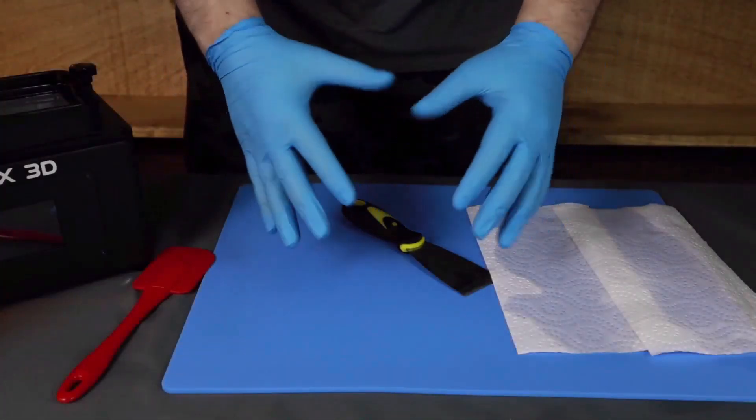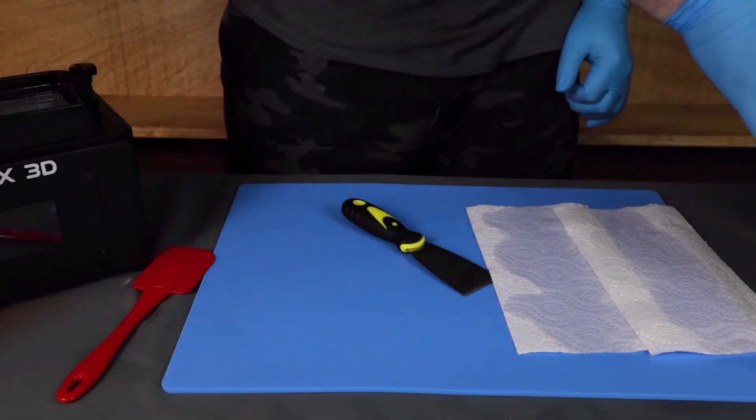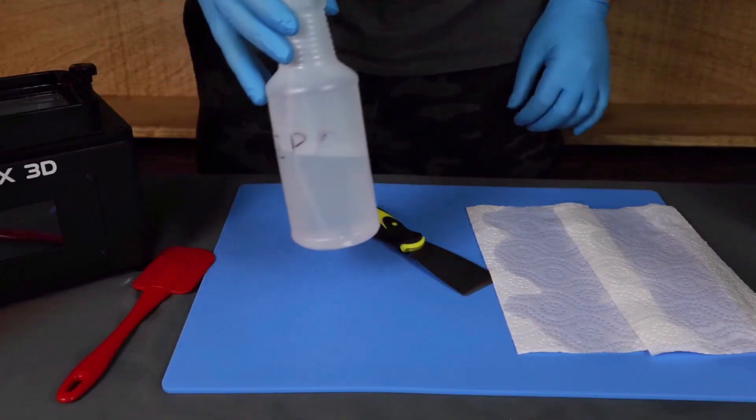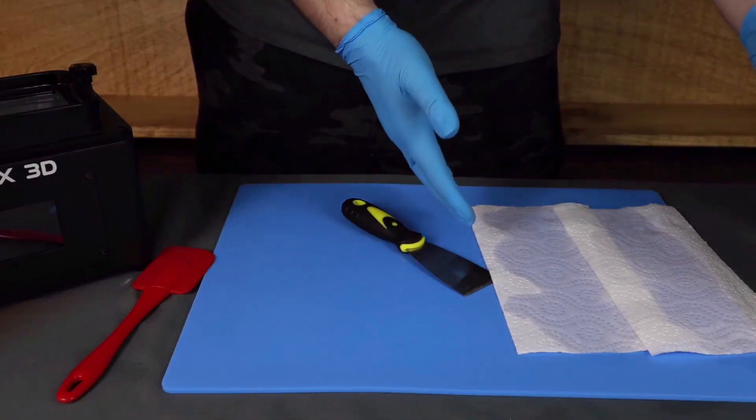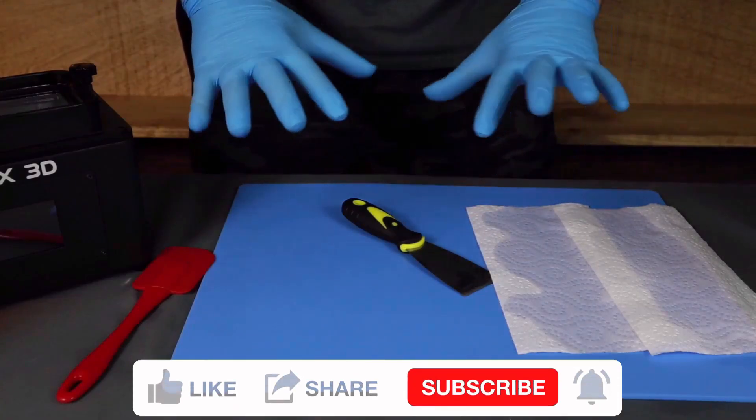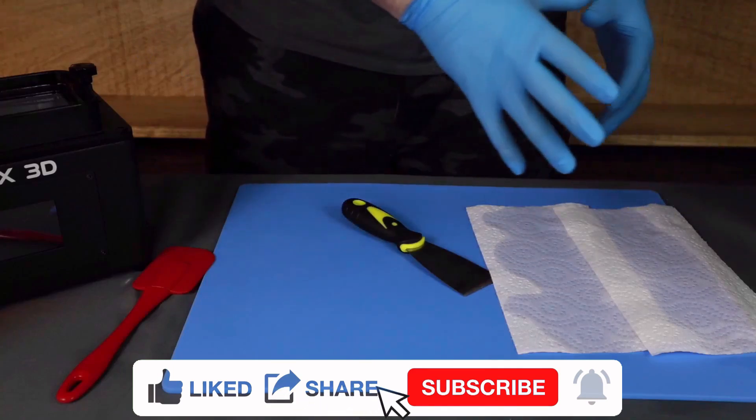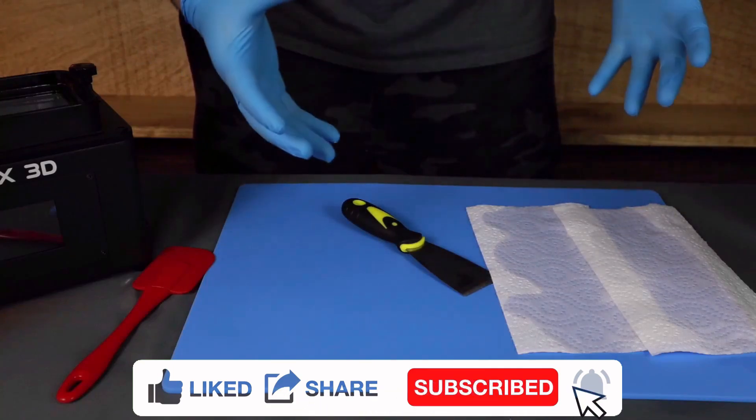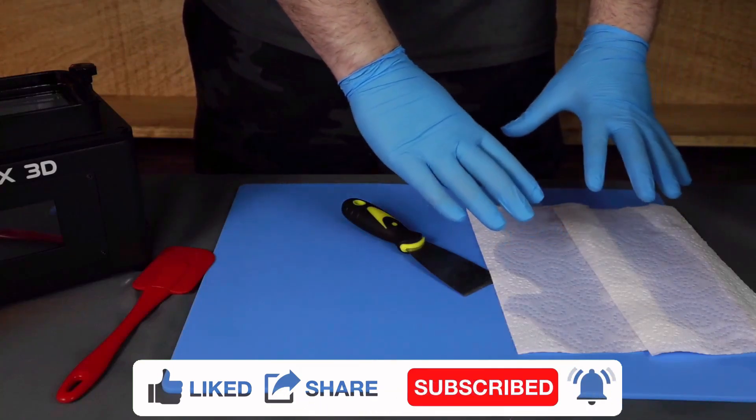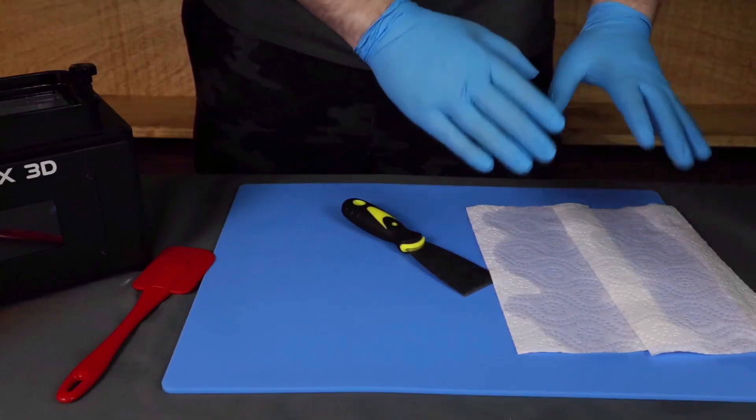First thing we're going to do is put our gloves on. After that, lay down two paper towels and spray them down with your cleaner. What this does is get two paper towels that are prepped and ready to go, so that whenever you have resin on your hands, you don't have to touch your spray bottle or paper towels or whatever else you have around. You can get your hands or your tools cleaned really quickly with these two paper towels that are prepped and ready to go.